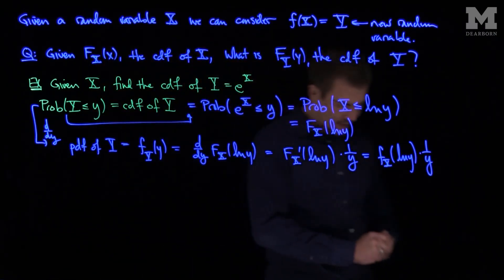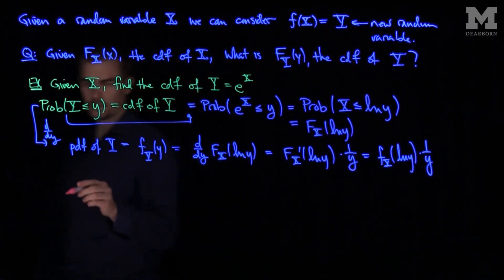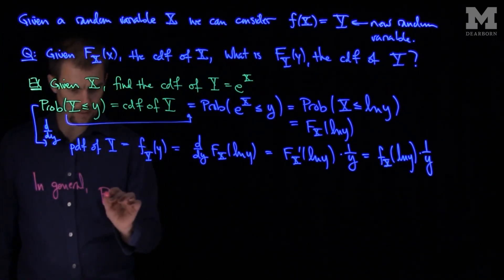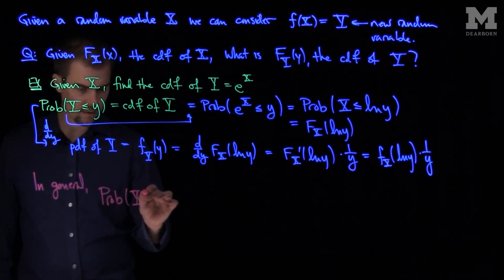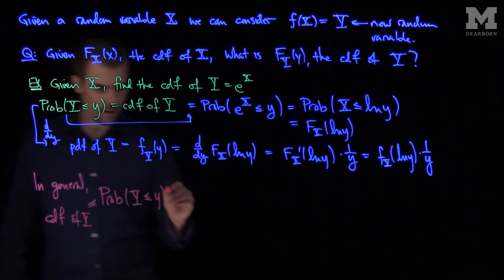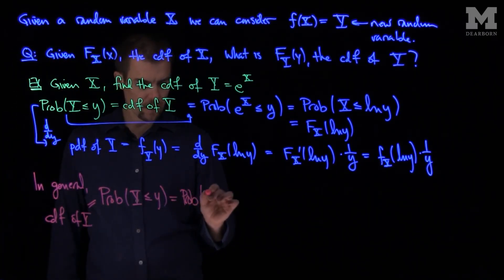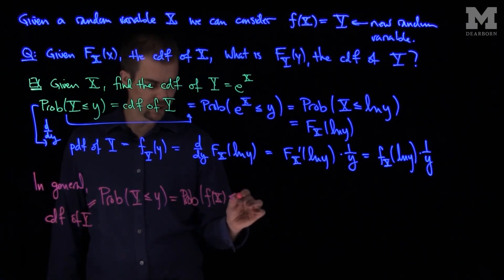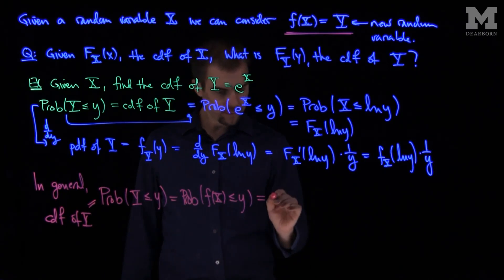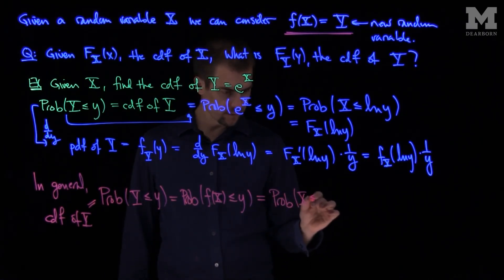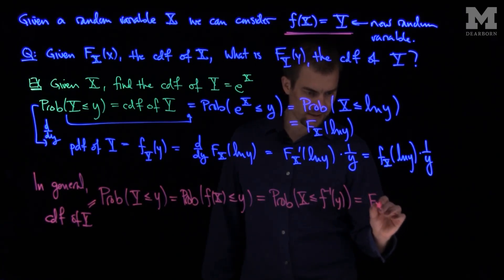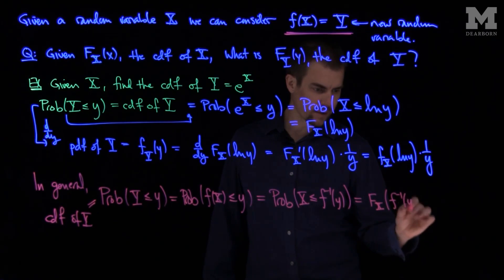We can take this reasoning and generalize it. In general, if I wish to compute P(Y ≤ y), which is our CDF of Y, and Y is a function of X, this equals the probability of f(X) ≤ y. If the function f is invertible, we can write this as P(X ≤ f⁻¹(y)), which is just F_X, the CDF of the random variable X, evaluated at f⁻¹(y).